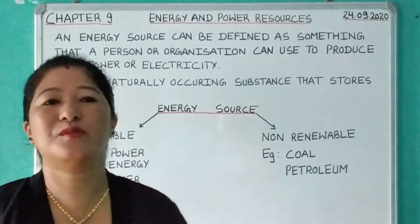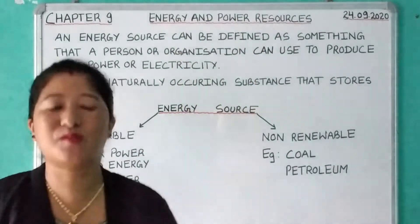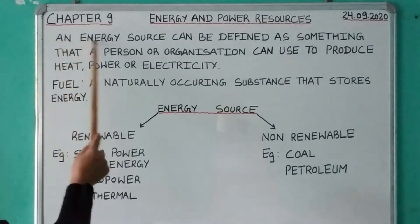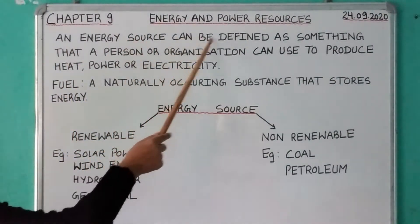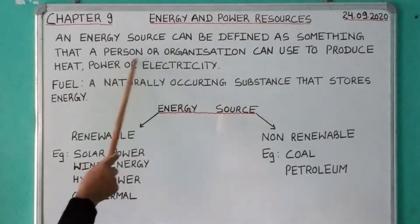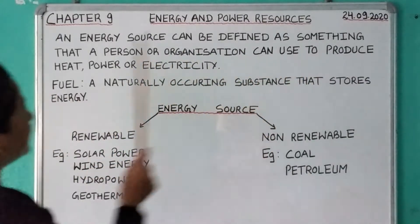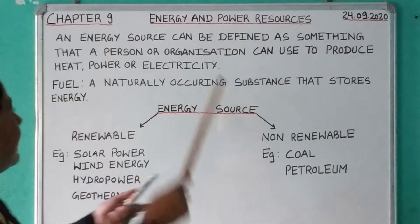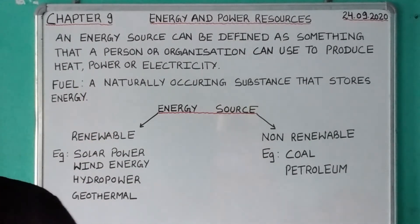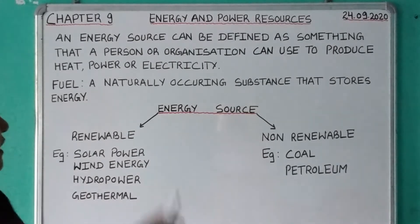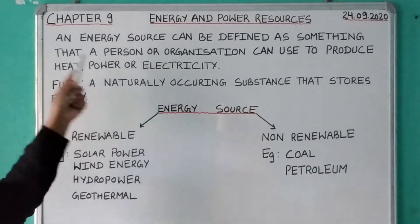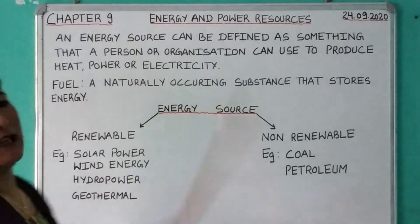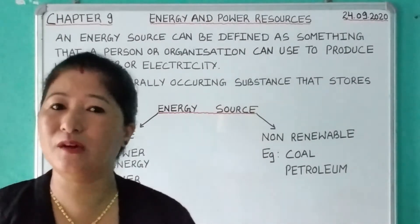In this chapter you are going to see the various sources of energy and power resources — that means from where do we get this energy. An energy source can be defined as something that a person or an organization can use to produce heat, power, or electricity.